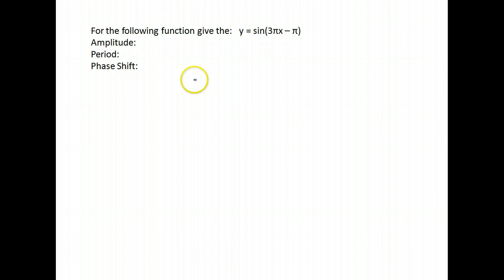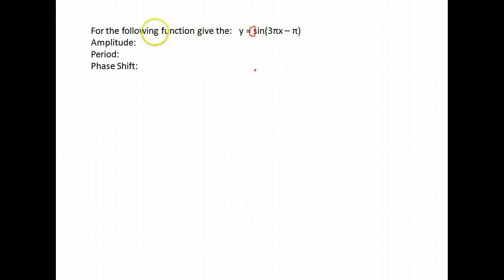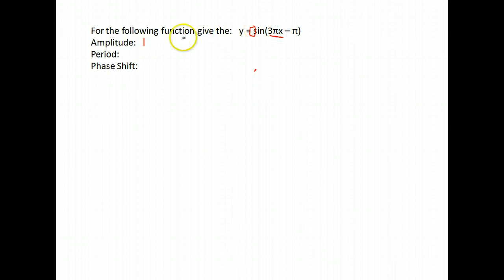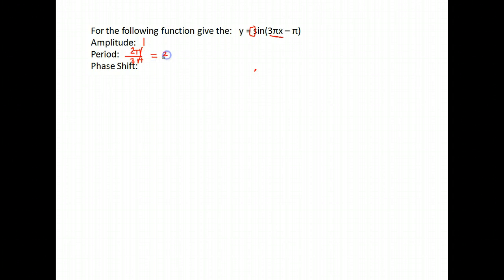Here is another example — amplitude, period, and phase shift. For amplitude, look directly in front of your cosine — there's nothing there, so it's just 1. For the period, we look for our x, take the normal period of 2π, and divide by the number directly in front of our x, which in this case is 3π. Notice the π's will cancel, and we get a period of 2/3. The new period will be 2/3 in length.